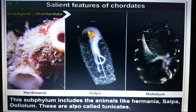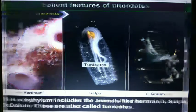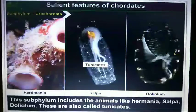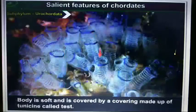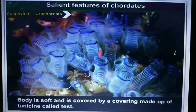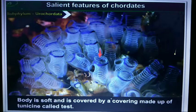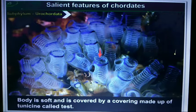These are also called tunicates. The subphylum Urochordata is also called tunicates. Why is it called tunicates? Because the body is soft and is covered by a covering made up of tunicin.